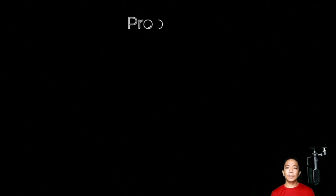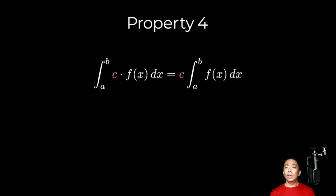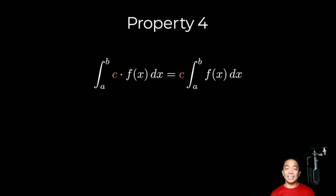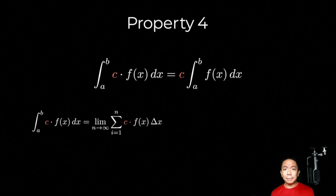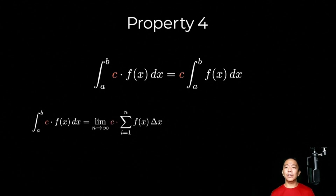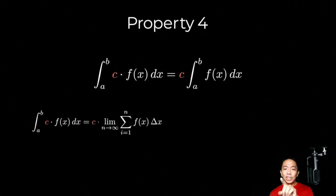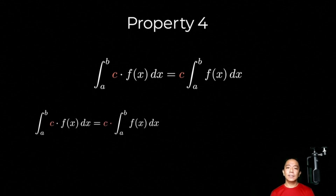Now let's move on to the fourth property. The fourth property states that the definite integral from a to b of a constant times a function is equal to that constant times the definite integral from a to b of f of x. Pwede daw natin ilabas yung constant dun sa definite integral. So why is this true? The definite integral from a to b of c times f of x is equal to the limit as n approaches infinity of the summation of c times f of x sub i times delta x. Yung constant na yan, pwede natin siyang ilabas sa summation — it's just a common factor. And pwede rin natin ilabas sa limits yung mga constants. So by taking out the constant, ang matitira sa atin is the limit as n approaches infinity ng summation from i equals 1 to n of f of x sub i times delta x, which is exactly the definite integral from a to b of f of x. So that proves the property.